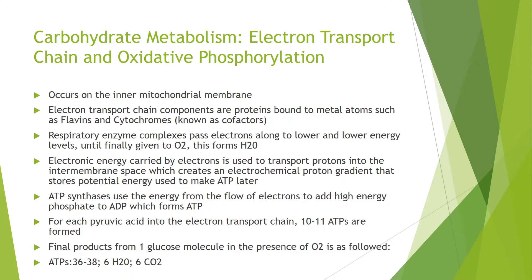The electron transport chain occurs in the inner mitochondrial membrane. Its components are proteins bound to metal atoms such as flavins and cytochromes, known as cofactors. Respiratory enzyme complexes pass electrons along to lower and lower energy levels until finally giving them to oxygen, which forms H2O. The electronic energy carried by electrons is used to transport protons into the inner membrane space, which creates an electrochemical proton gradient that stores potential energy used to make ATP. ATP synthase uses the energy from the flow of electrons to add a high-energy phosphate to ADP, forming ATP.